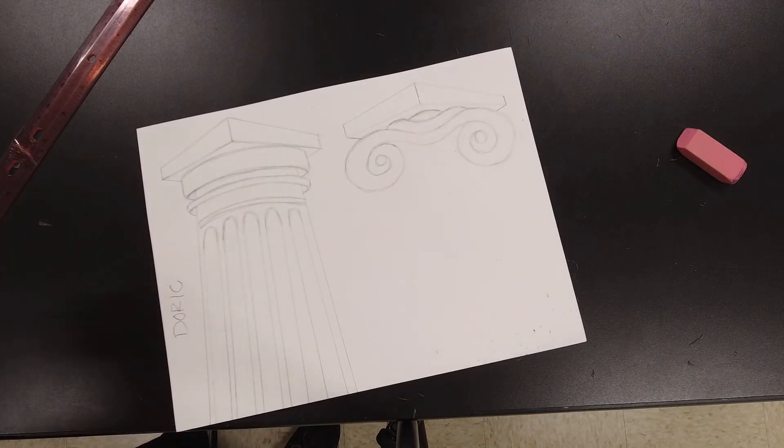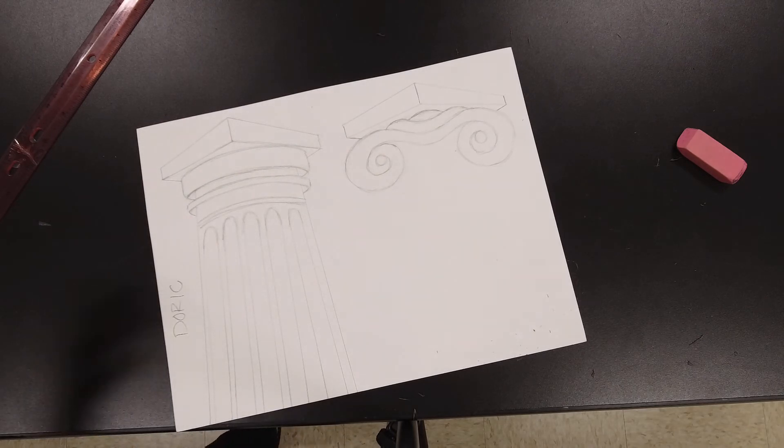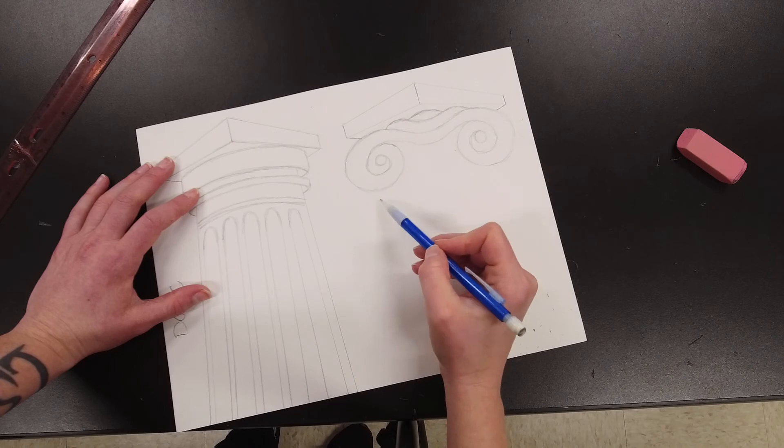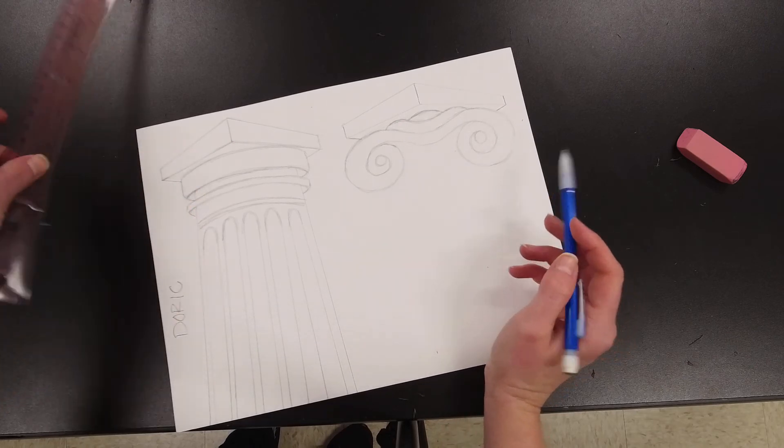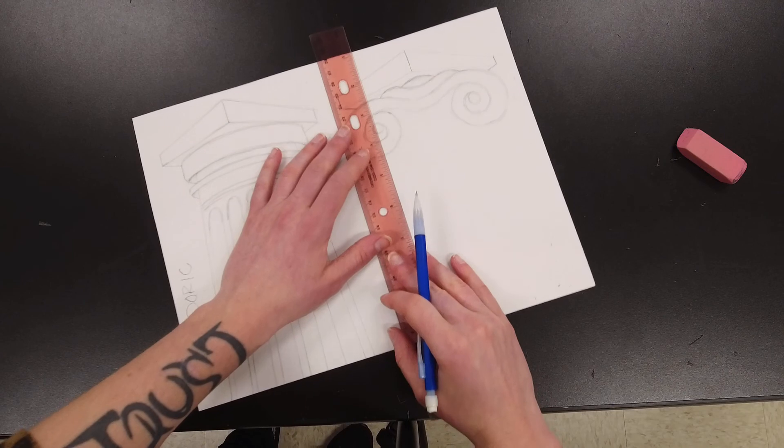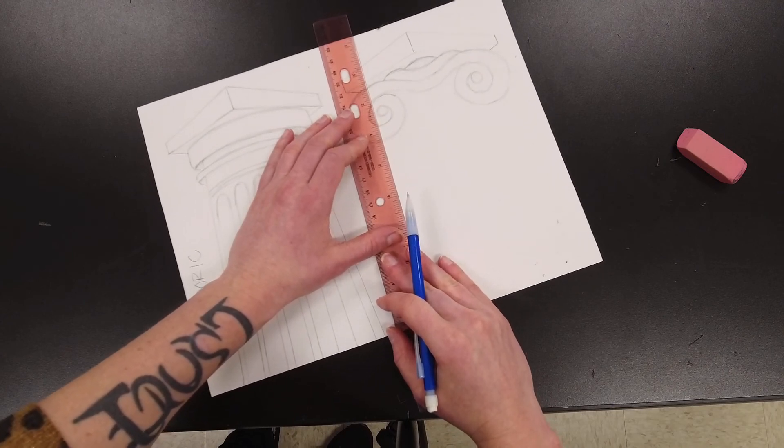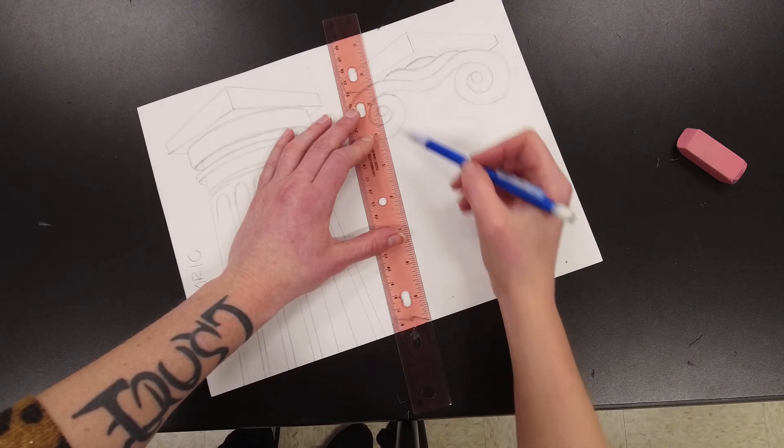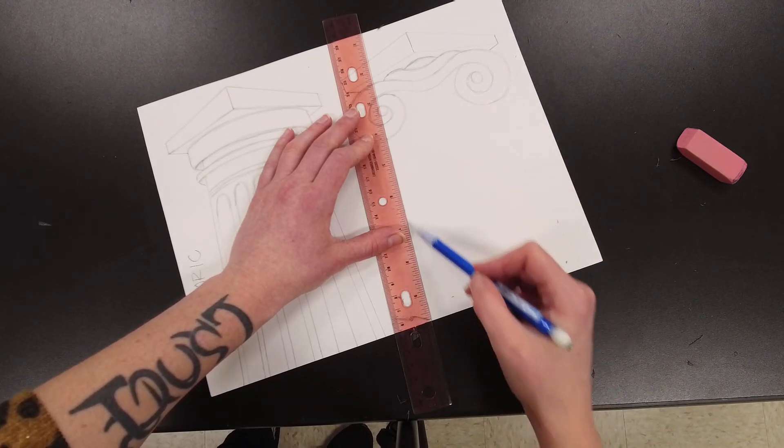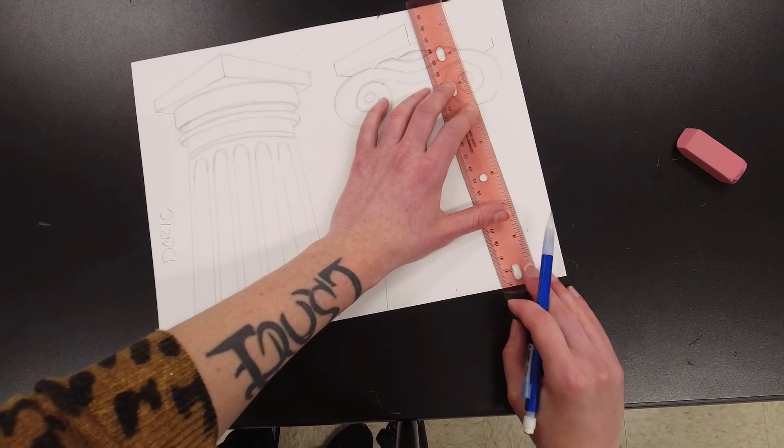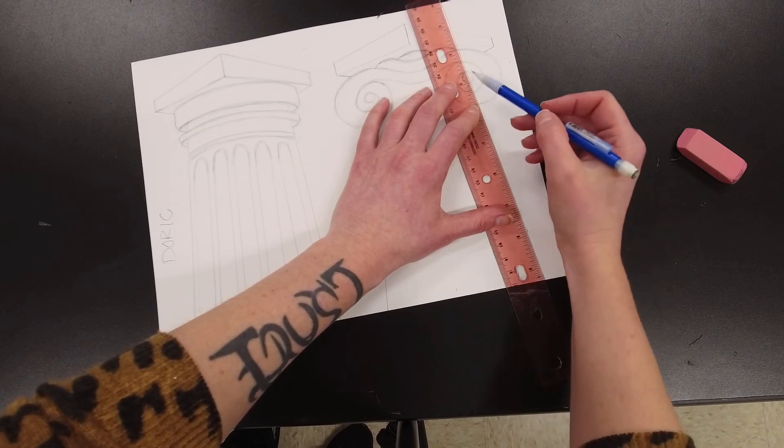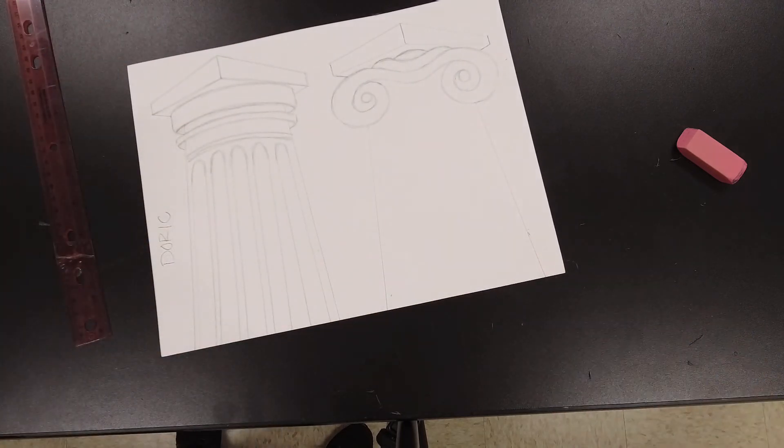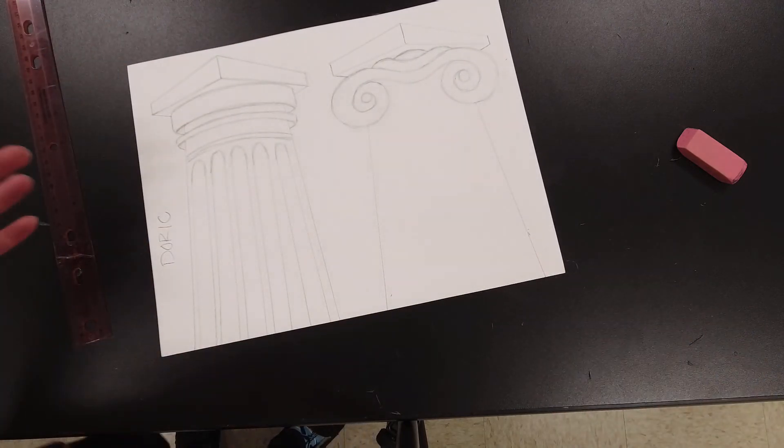But that might be sort of the beginning of an ionic example. Then I'm going to have sort of a curve that goes under all of it. But first I'm going to go ahead and get the width of my column in there so that I don't make anything too wide. I'm going to have it kind of start in the middle of this circle and get wider as it goes down. So now I know where sort of the rest of my column is going to be.